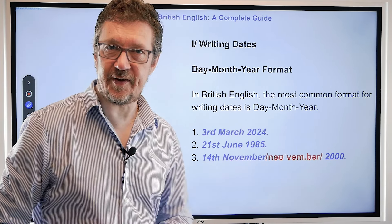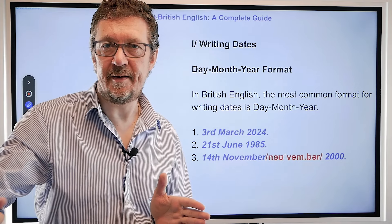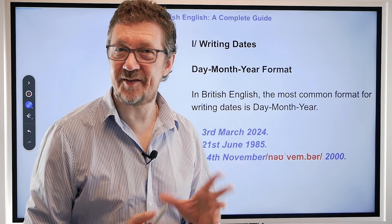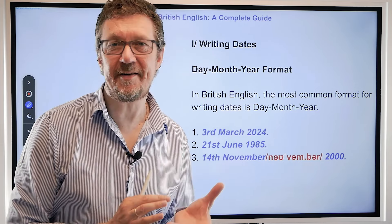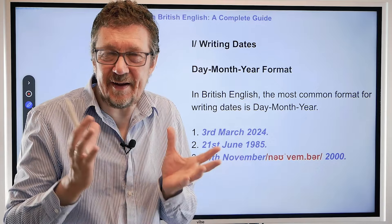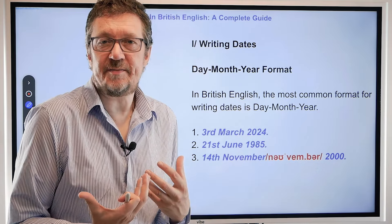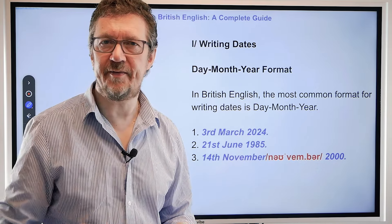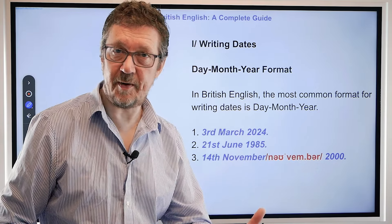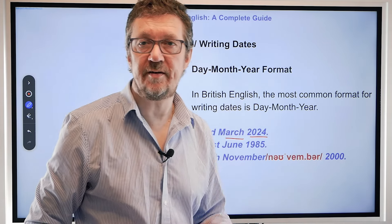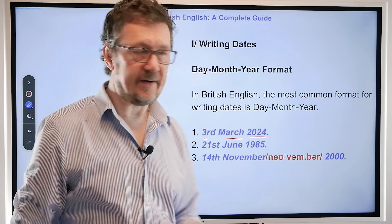In British English we always do day, month and year. I always have to change things on the internet if I've got something in American because it doesn't make sense to me. But as a British person I always think of day, month, year first. And it's the same spoken, it's the same written. As you can see here we have 3rd of March 2024 — you can say it different ways.